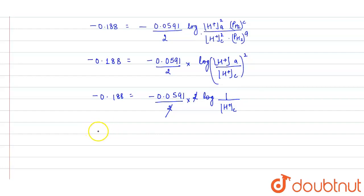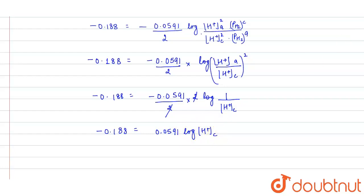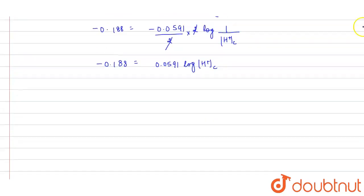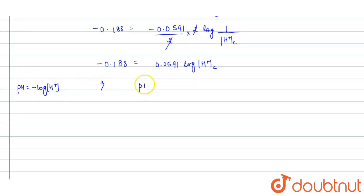From this: minus 0.188 equals 0.0591 times log[H⁺]. We know that pH equals minus log[H⁺], so from here we can calculate that pH equals 3.18.